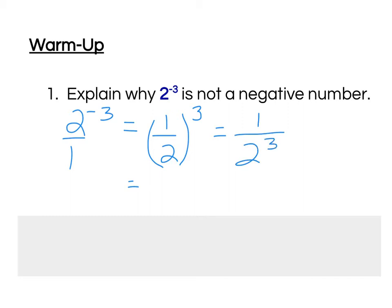And then when I evaluate that, well, 2 cubed is 2 times 2 times 2, you'll remember, not 2 times 3. And I'm running out of a little bit of room here. So, finally, that gives me 1 over 8, which is not a negative number.